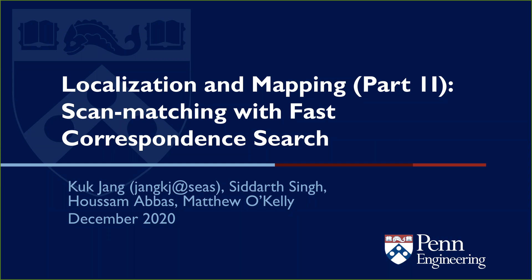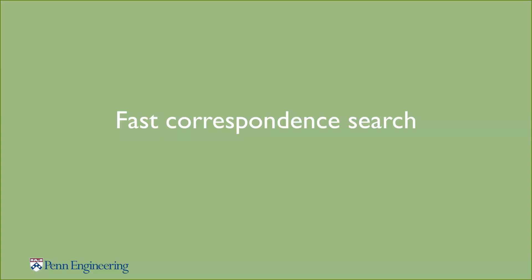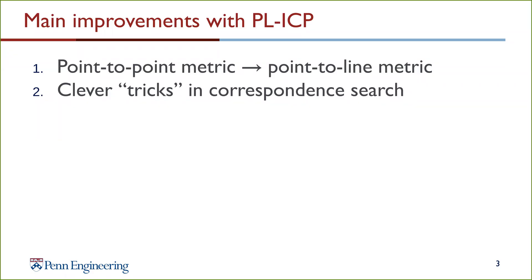Welcome back everyone. In today's lecture we'll continue our discussion on localization and the PLICP algorithm for scan matching. Today we'll focus on the fast correspondence search component of the PLICP algorithm. Compared to the vanilla ICP algorithm, there are two main innovations of PLICP: the first was the change from using a point-to-point metric to a point-to-line metric, and the second improvement, which we'll cover today, involves clever heuristics and data structures that allow for a faster correspondence search.